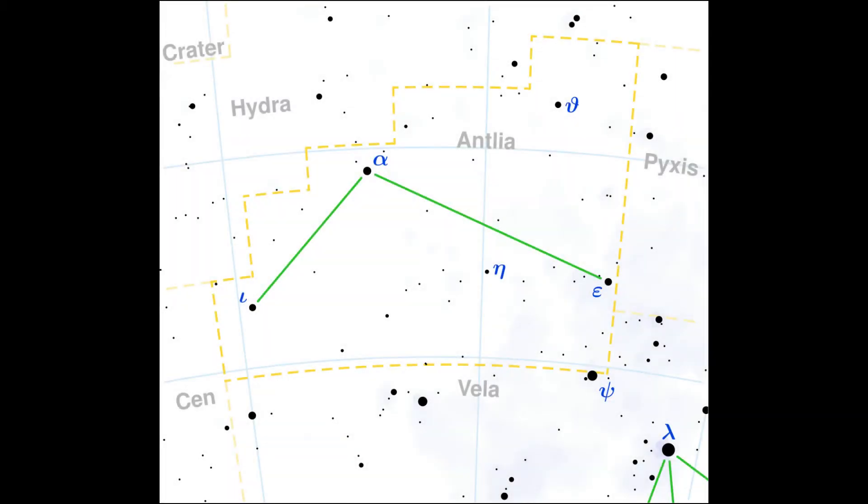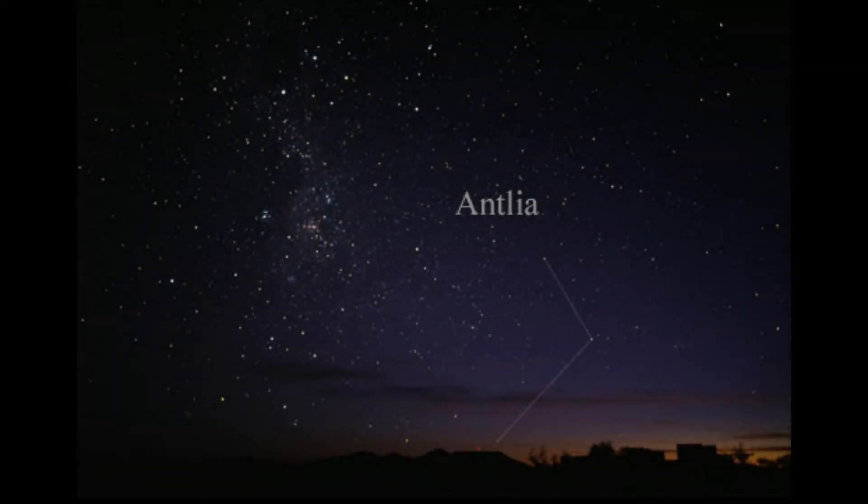Antlia is a small constellation in the second quadrant of the southern hemisphere that occupies an area of 239 square degrees. It is often depicted as a single cylinder air pump, and its name means pump in Latin.